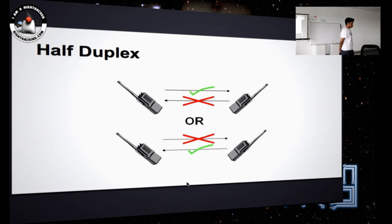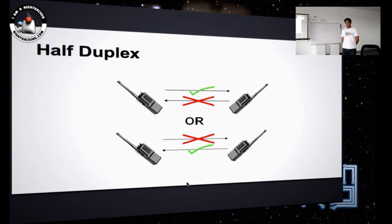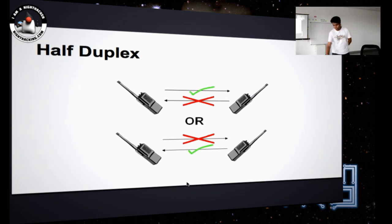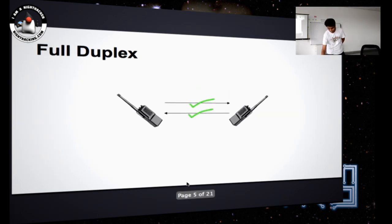WebSockets are full duplex, meaning you can send messages in both directions. HTTP is half duplex — you could either send a request or receive a response. WebSockets are full duplex, so both directions are possible simultaneously. That is what WebSockets do.